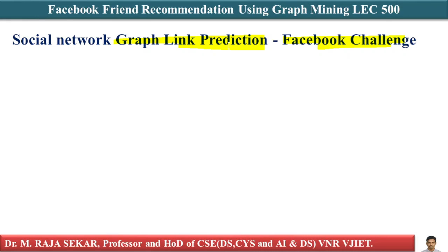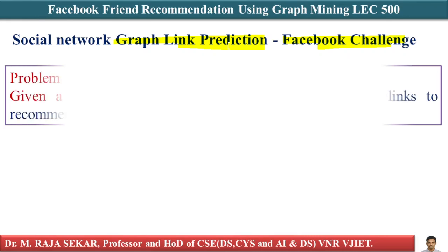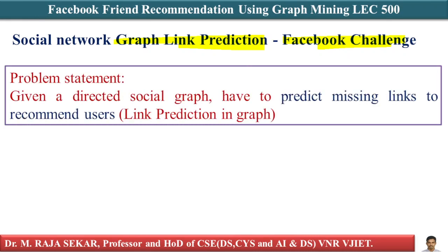Imagine each user of a social network is represented as a dot. Let's assume these are multiple users of a social network. This person and this person are related to each other — if this person is connected to this person, and again this person is connected to this person.